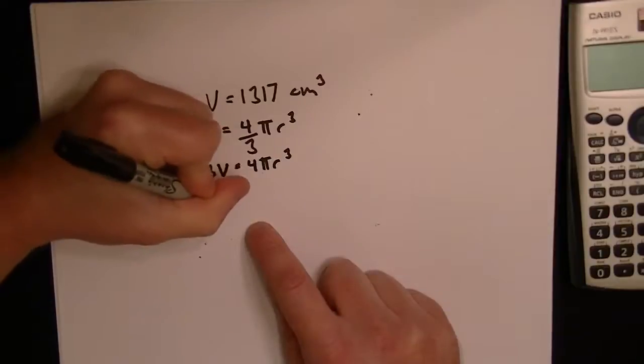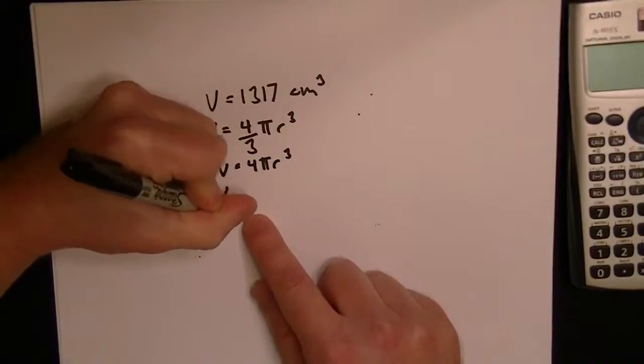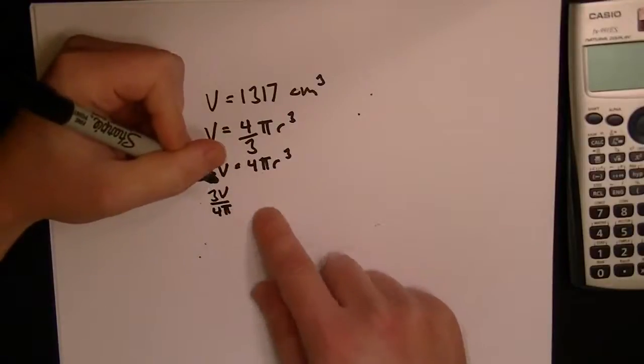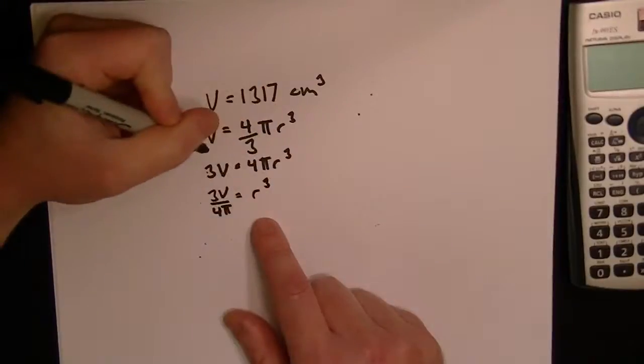Then 3v divided by, we'll just divide by 4 pi, or you could divide by 4 and then by pi, but it comes out the same, equals r cubed.